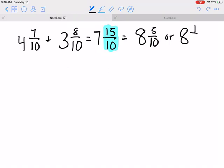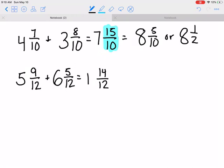5 and 9/12 plus 6 and 5/12, and you would get, 9 plus 5 is 14/12 and 5 plus 6 is 11. So now I know I have to change this mixed number with an improper fraction into a true mixed number. So I could take out a whole from 14/12 and add it to 11, so I would get 12 and I'm left with 2/12.